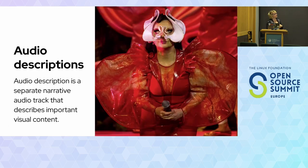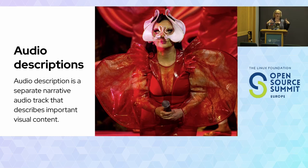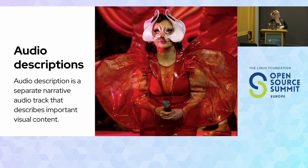Audio descriptions are separate tracks for visual content like ballets or plays. It's a separate narrative audio that describes the important visual content, making it accessible for people who can't see. For something like Cirque du Soleil, there's a visual appeal and emotions being evoked, so having that audio description really helps convey the mood of the performance.